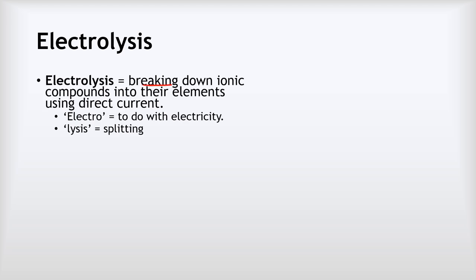So what is electrolysis? Electrolysis is breaking down ionic compounds into their elements using direct current, which is a type of electricity we'll look at in a second. The word electrolysis is actually made from two parts: the 'electro' part means anything to do with electricity, and the 'lysis' part means splitting something up. So electrolysis means splitting compounds up using electricity.